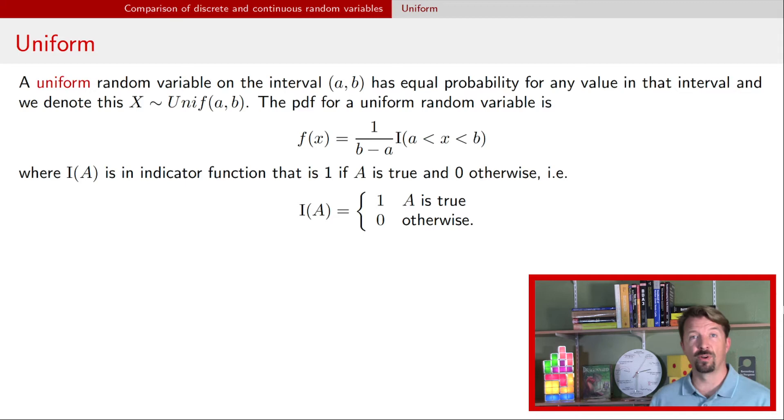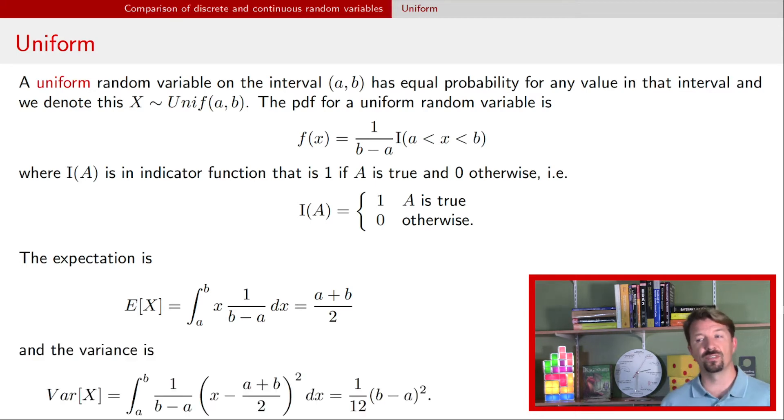From this probability density function we can derive the expectation which turns out to be (a + b)/2, and we can also derive the variance which turns out to be (1/12) times (b - a)² squared.